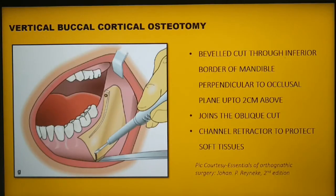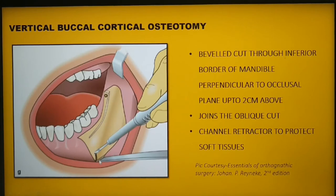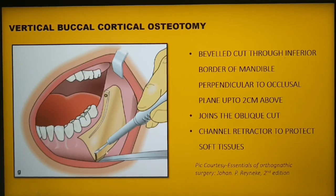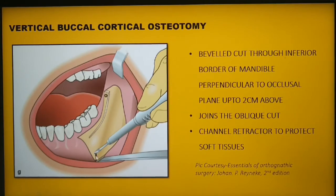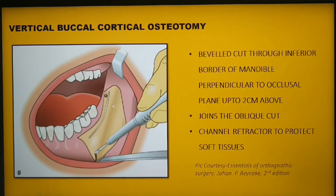Prior to performing the vertical buccal cortical osteotomy, protect the soft tissues at the lateral and inferior border of the mandible using a channeled retractor. The vertical osteotomy should involve the lower border of the mandible — the vertical cut starts from the inferior border and goes straight up, perpendicular to the occlusal plane, for about two centimeters before joining the oblique cut. This completes all three osteotomies.